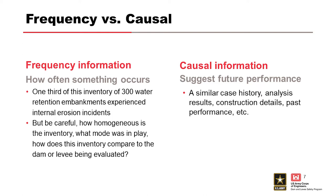Casual information deals with indicators that might suggest future performance. Examples include similar case histories, analysis results, construction details, or past performance. As assessors, we're going to have to be able to synthesize both of these types of information — frequency and casual — when making our probability estimates.